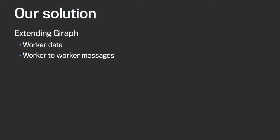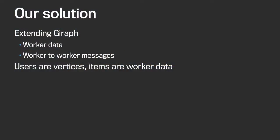After unsuccessful tries to find a better solution within the existing Giraffe model, we started thinking about what the solution would look like without model limitations, and then extended the model to support it. We extended Giraffe with two things: we started heavily using worker data and added the concept of worker-to-worker messaging. Before this, only vertices could communicate. By adding these concepts, workers became an essential part of the algorithm. We represent data with users as vertices, and items as part of worker data.